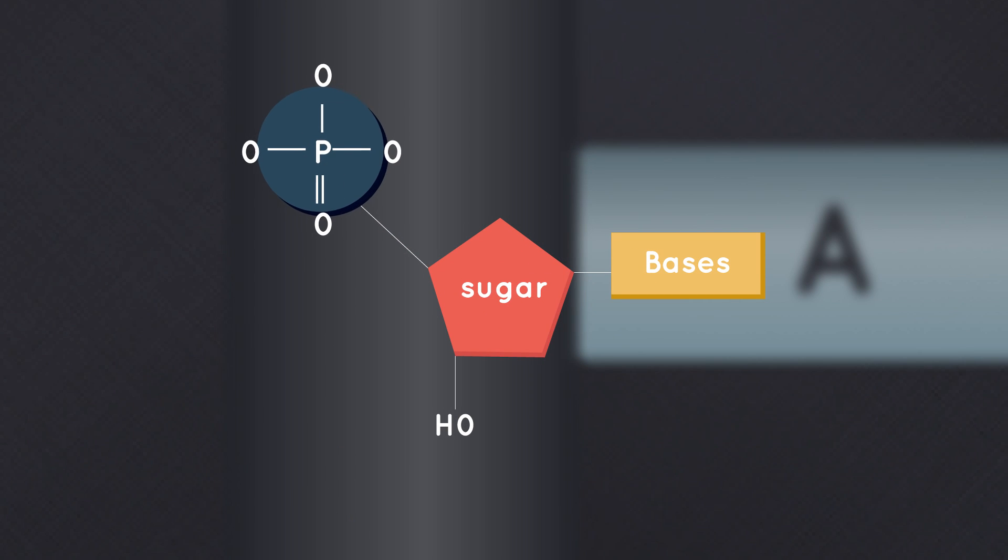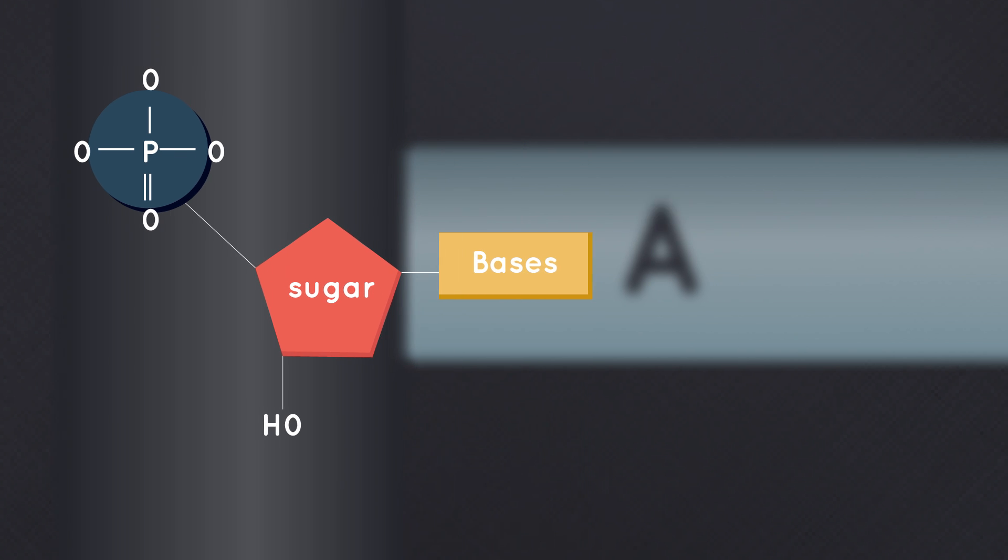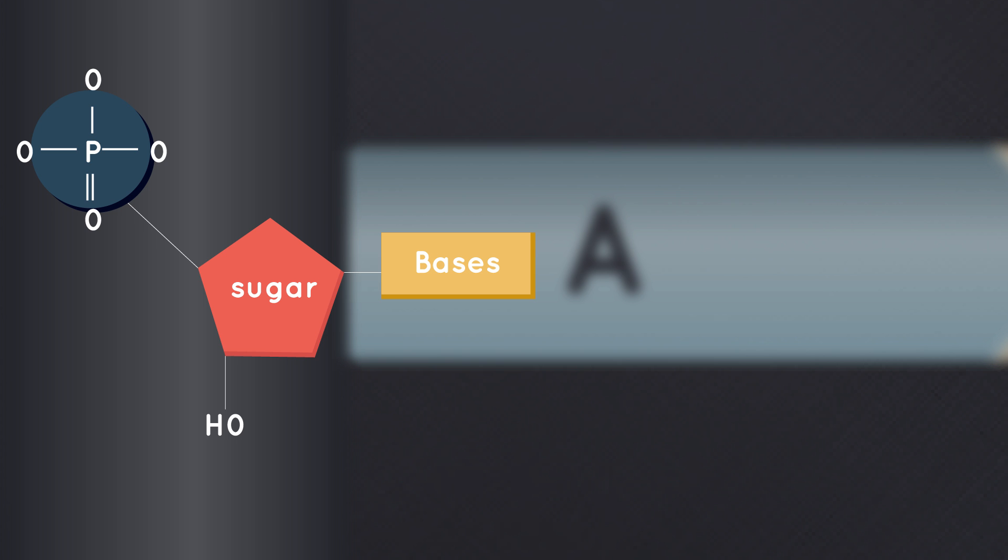Each nucleotide contains a phosphate group, a sugar group and a nitrogen base. When people think of DNA they usually think of these bases. There are four bases.